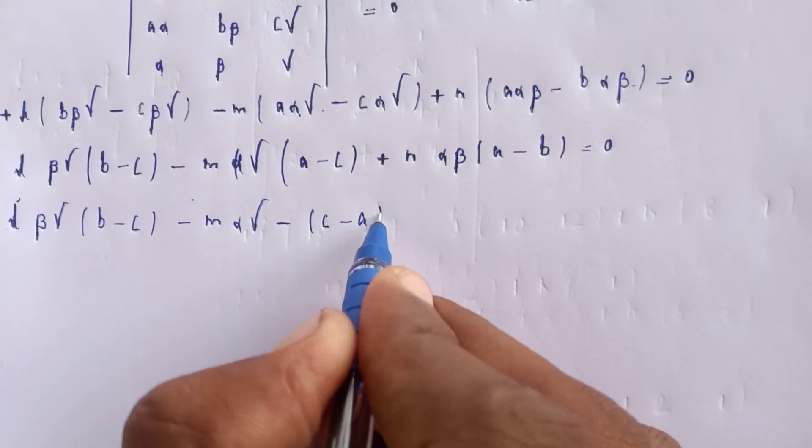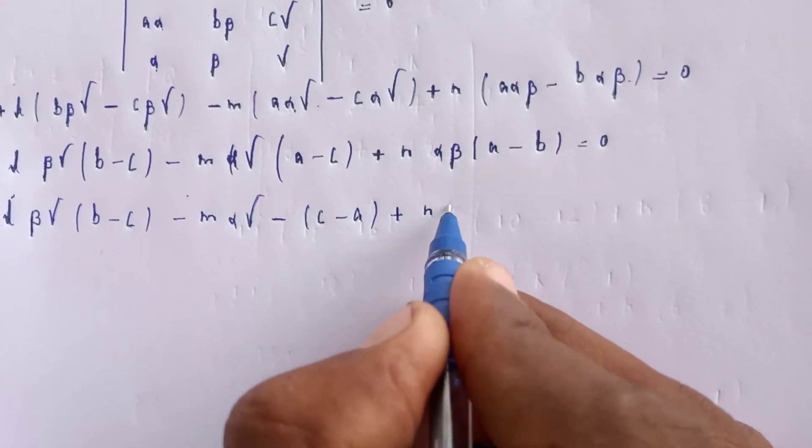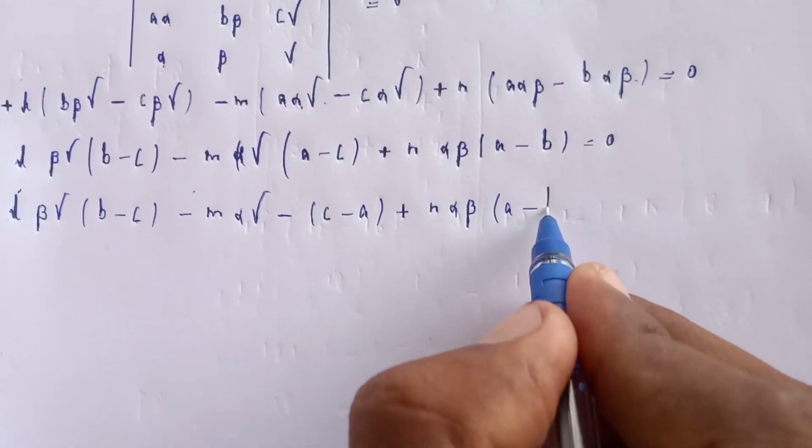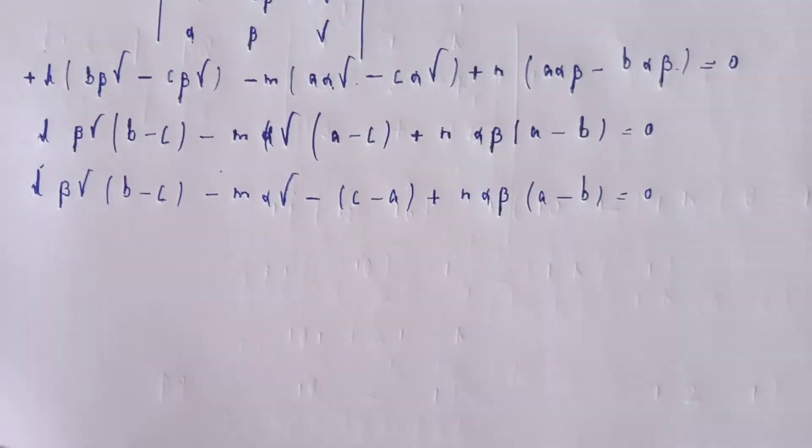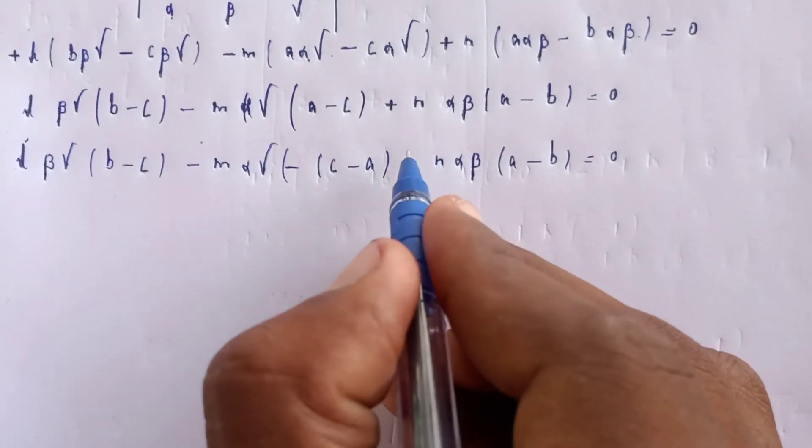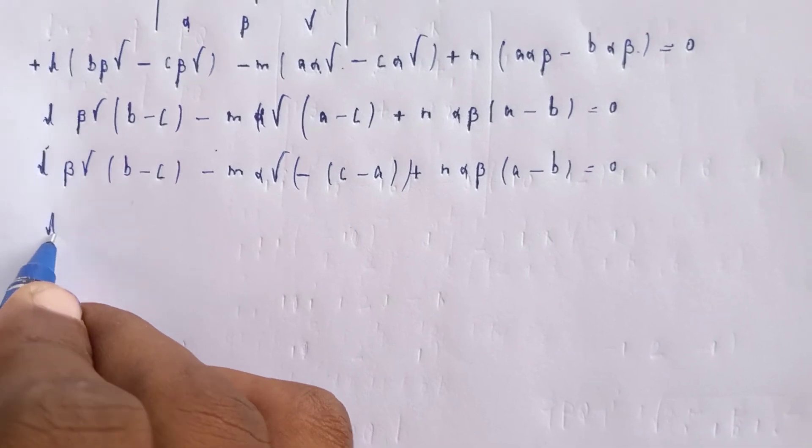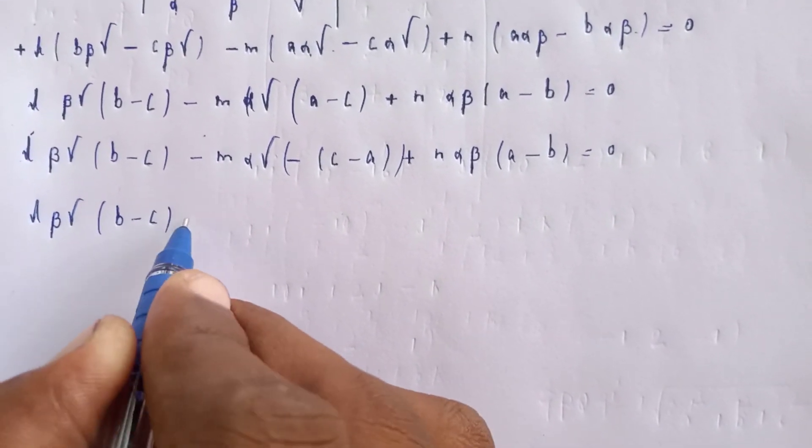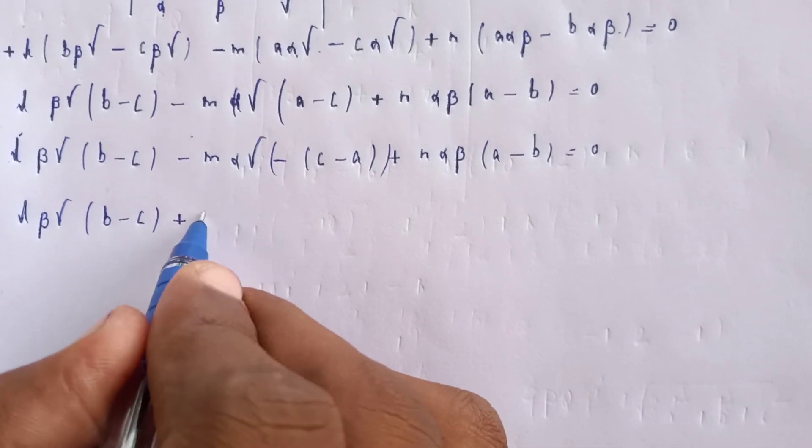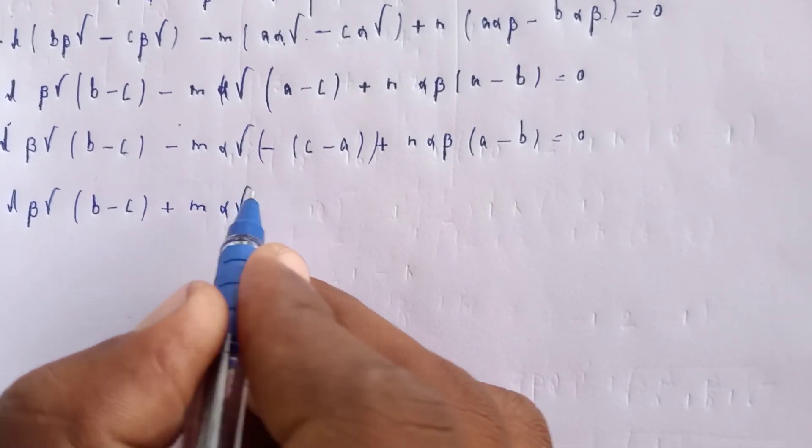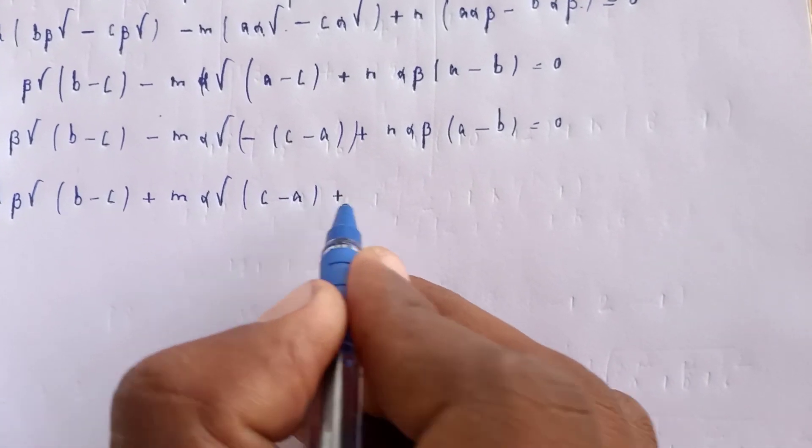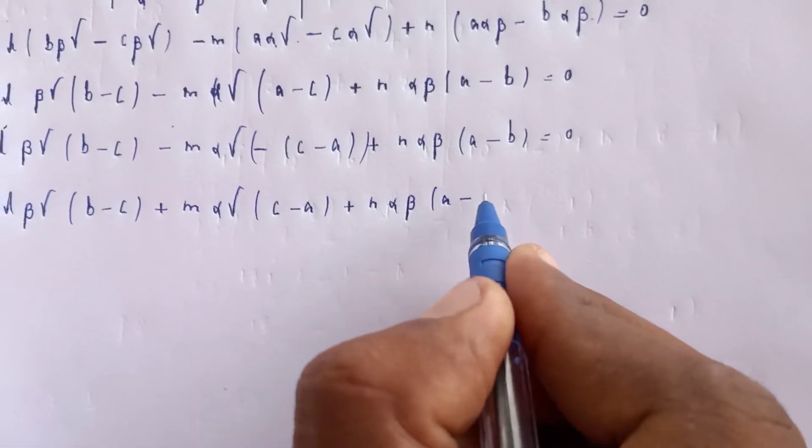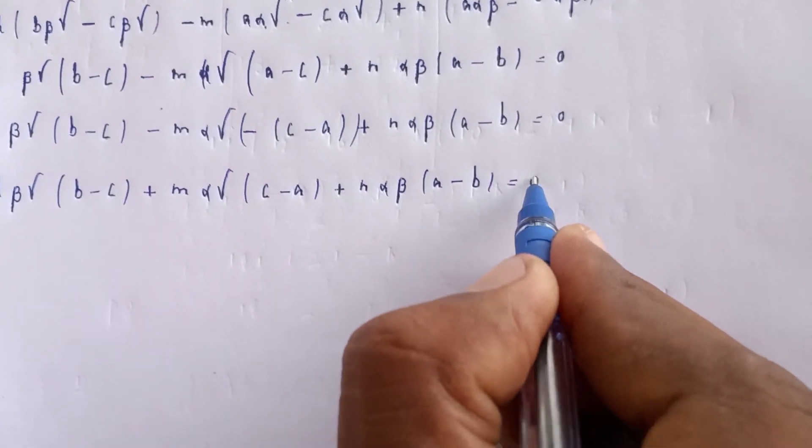Simplifying to: α·β·γ coefficient and α·γ, α·β with (a - b) equals zero. Working with minus times minus gives plus: l·β·γ of (b - c) plus m·α·γ of (c - a) plus n·α·β of (a - b) equals zero.